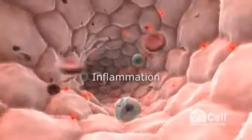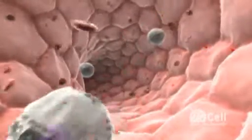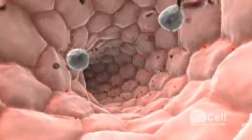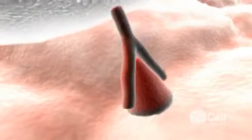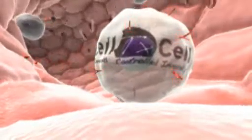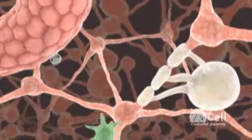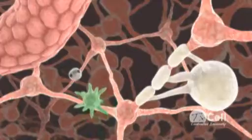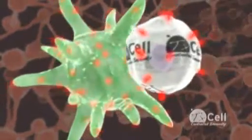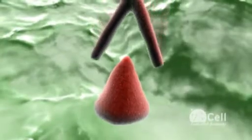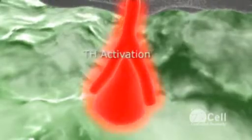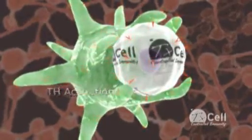Inflammation. Activated pro-inflammatory T-lymphocytes circulate in the peripheral blood and migrate into the inflammation area. Antigen presentation by specialized dendritic cells locally triggers their secretion of pro-inflammatory cytokines that promote the inflammatory immune response.